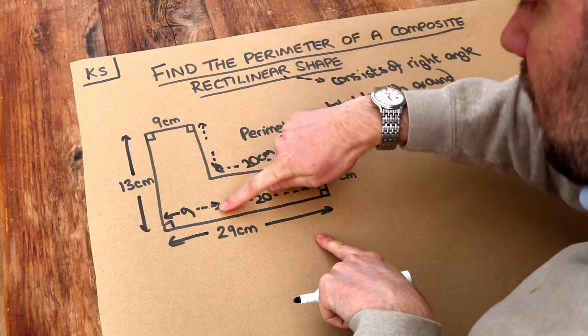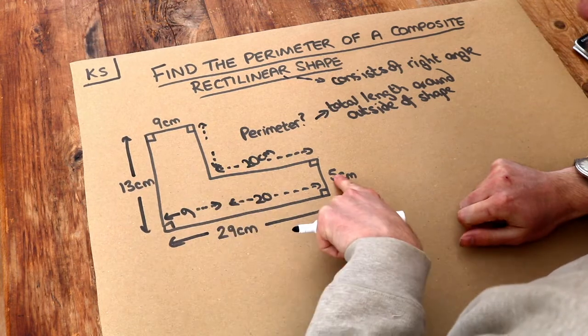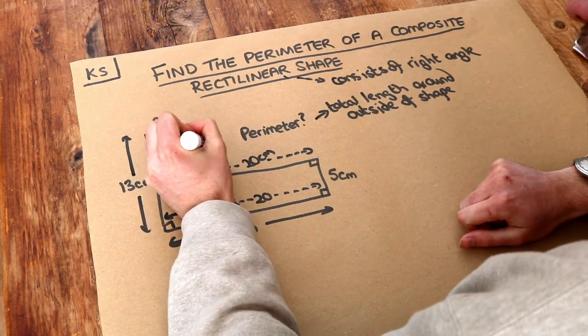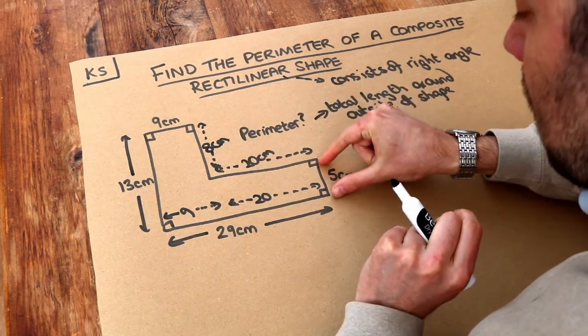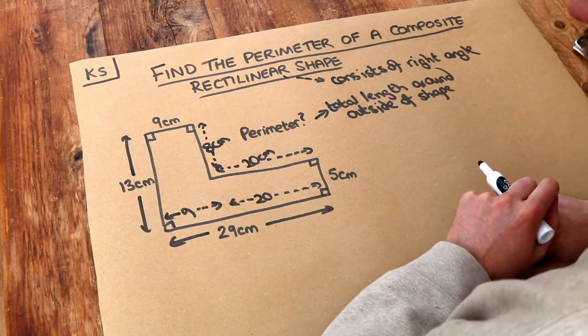So the height of the bottom is 5cm, but the height of the whole thing is 13. Then we can do the 13 minus the 5 to work out this length, and that's going to be 8cm. So let's check that. If we've got 8cm at the top plus the 5cm at the bottom, that's the total height of 13cm. That works.